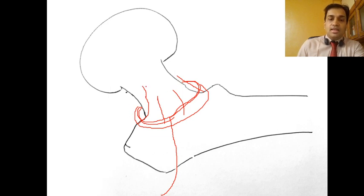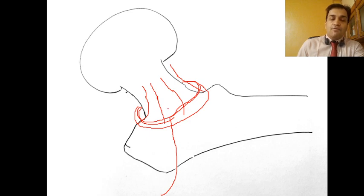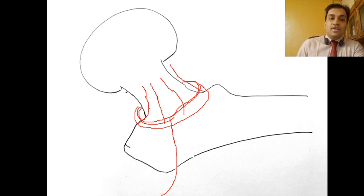These arteries ascend the neck of the femur towards the head, and out of these four branches it is the lateral ascending intracapsular branch which carries 75% of the total blood supply.